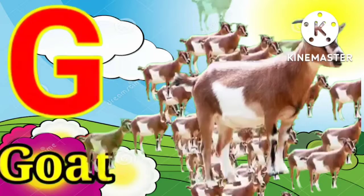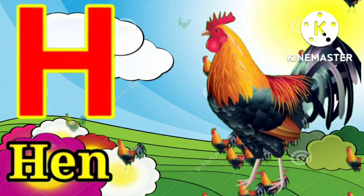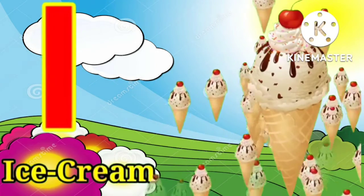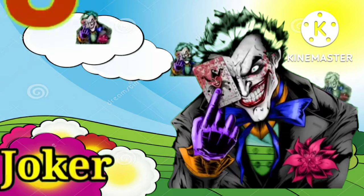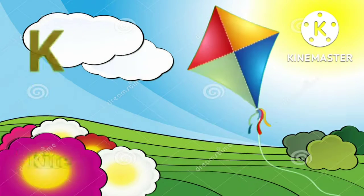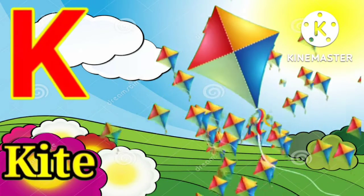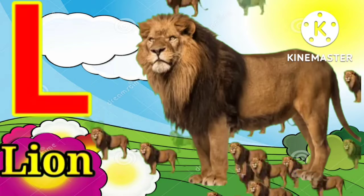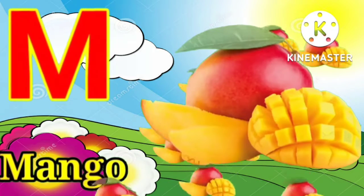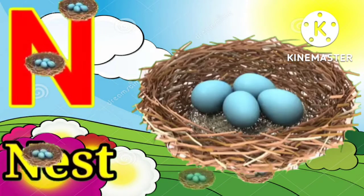H for hen, I for ice cream, G for joker, K for kite, L for lion, M for mango, M for nest.